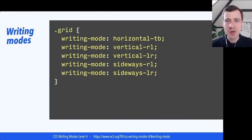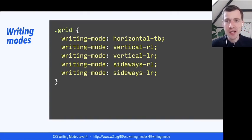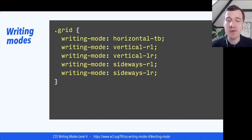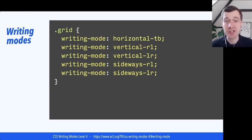Writing modes can be set in CSS as a property. There's the writing-mode property, and then you can use values like horizontal-tb (top to bottom), vertical-rl (vertical right to left), vertical-lr (vertical left to right). And then there are two sideways properties that are kind of meant for interesting, creative typographic effects — not so much for specific languages.